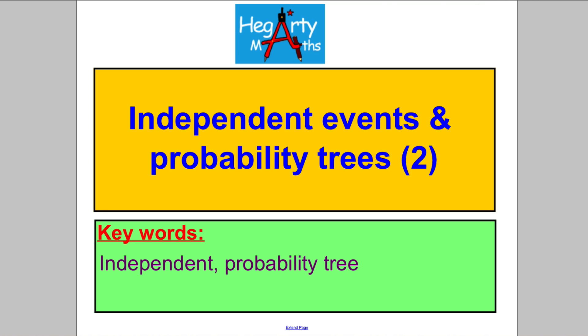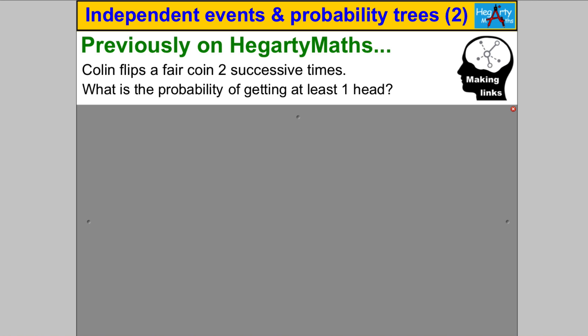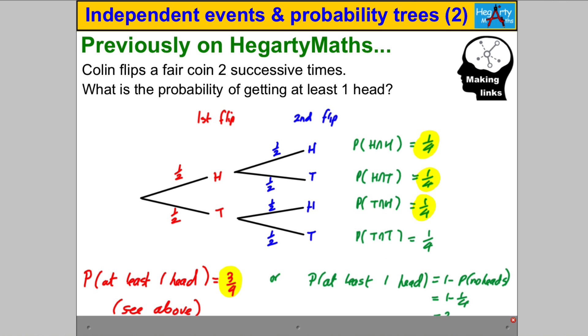Hey, welcome to another video from Hegarty Maths. It's Mr. Hegarty here. In this video we're continuing our work on independent events and probability trees — our second video on that topic. So let's start with something you should already know how to do. Pause the video and double check you could answer the following question. You drew a probability tree and the probability of at least one head was three quarters.